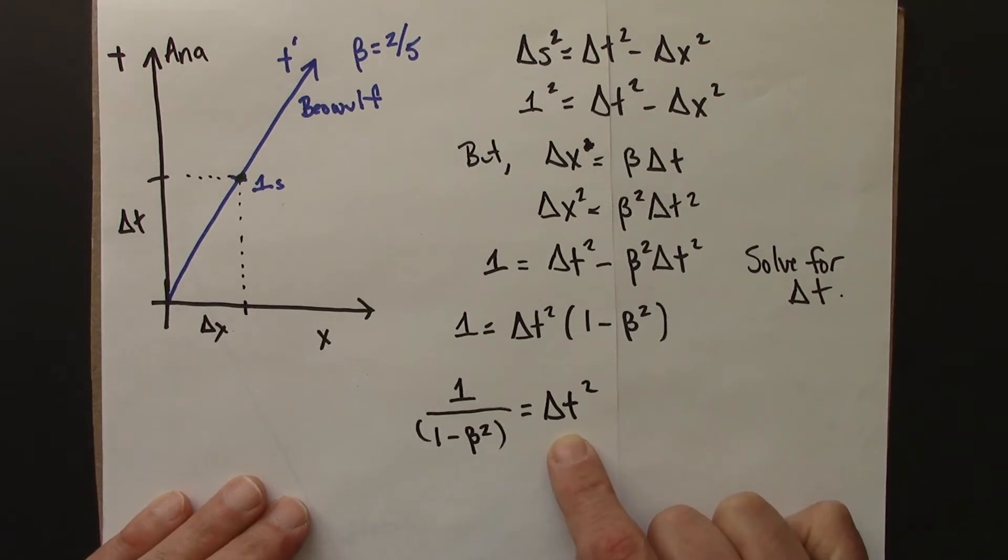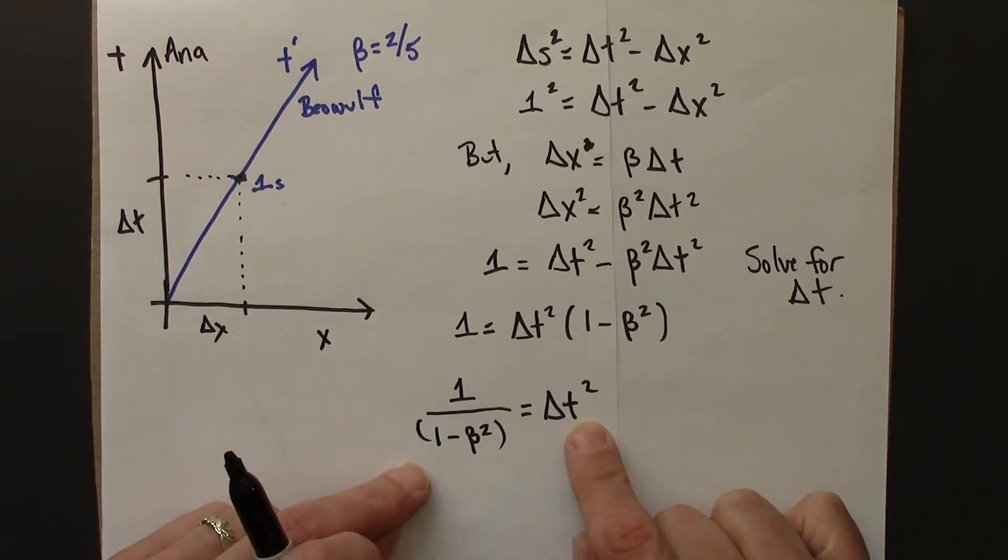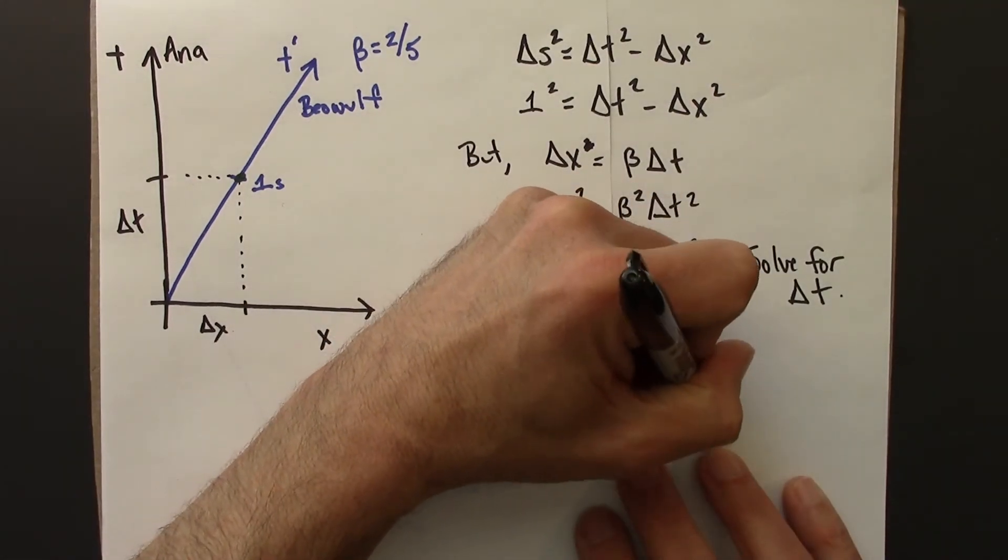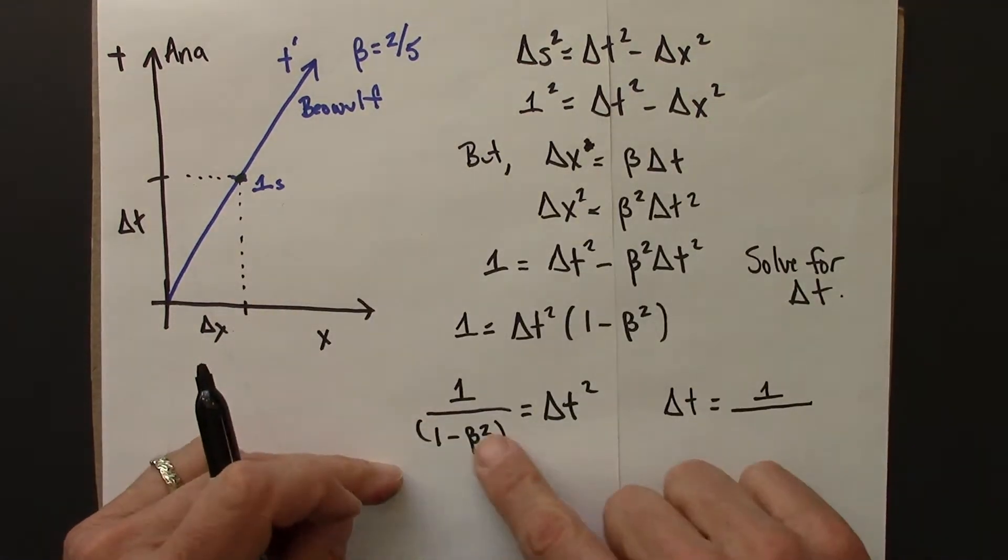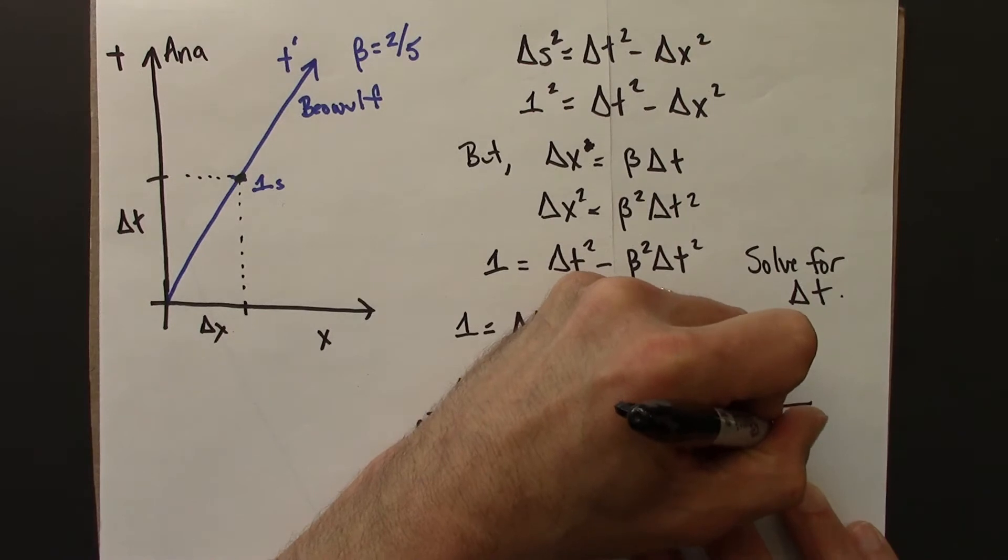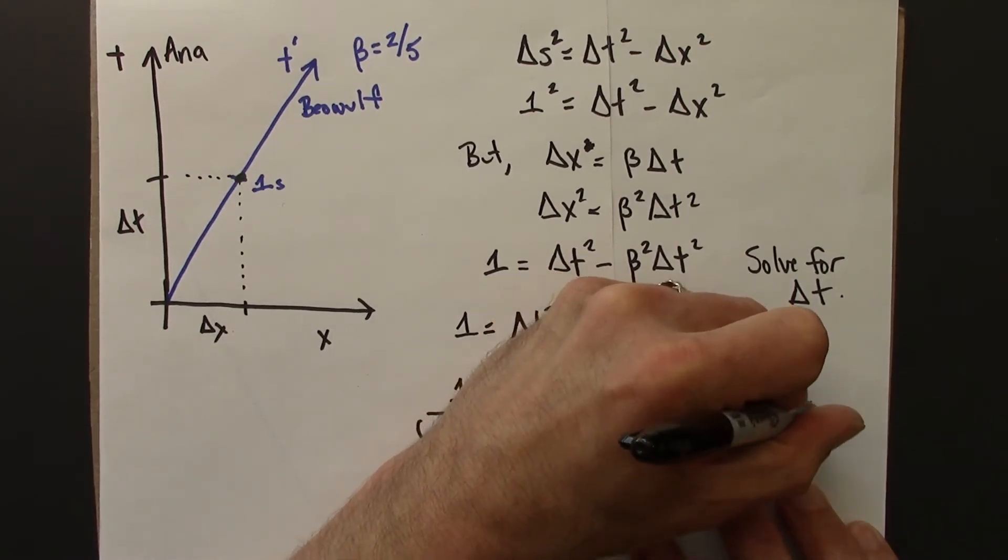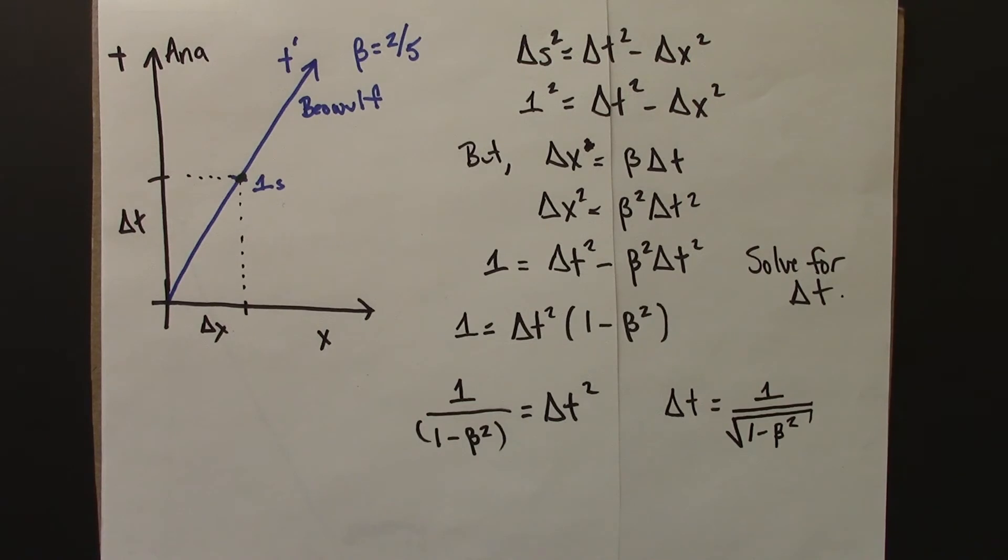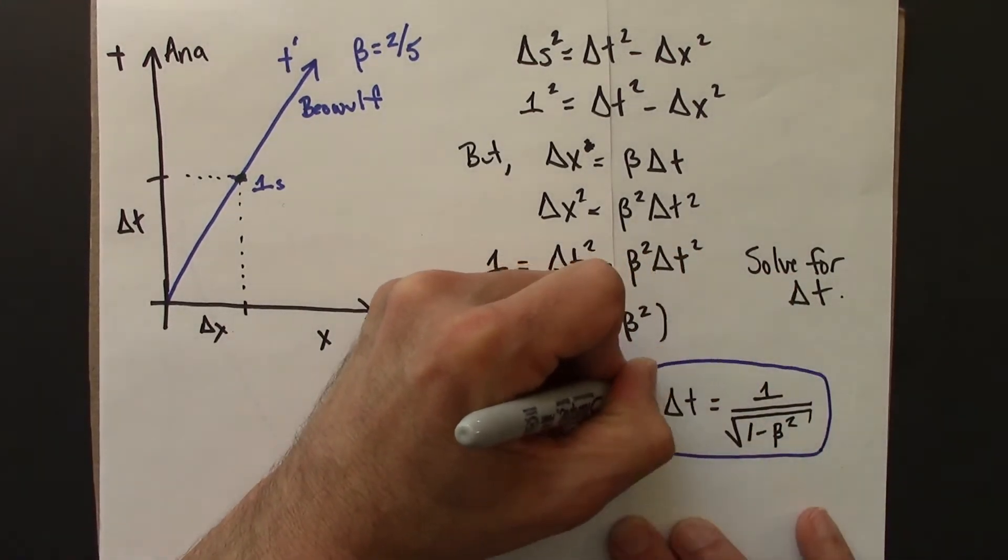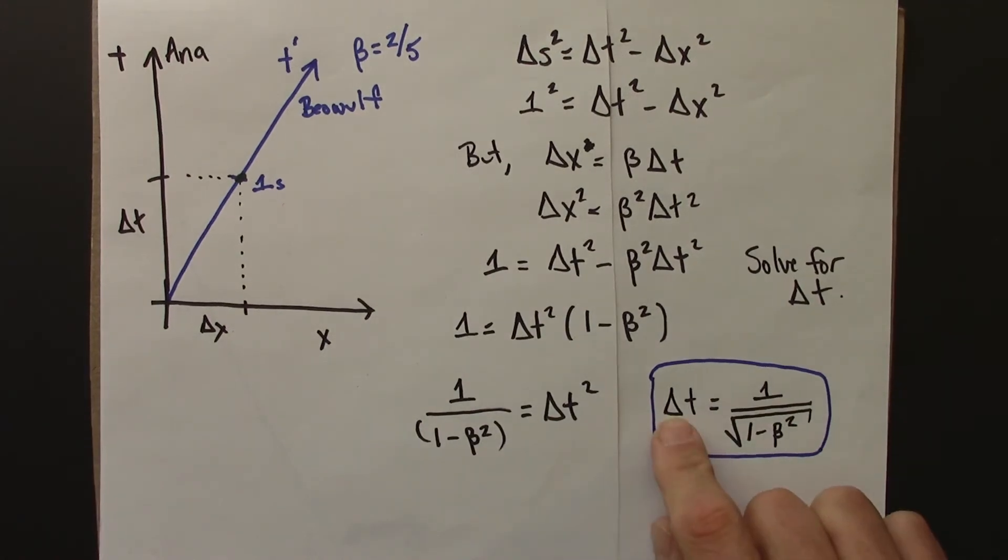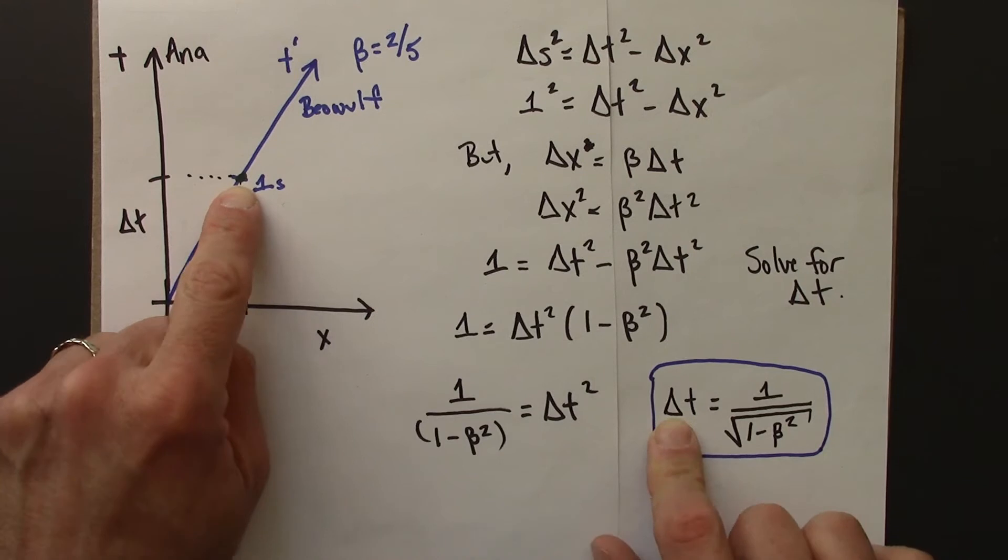Alright, so this is looking like progress. The last thing I'm going to do, because I want delta t, not delta t squared, is I'm going to take the square root of both sides. So I'm going to do that. I'm going to get the delta t is 1 over, and I have to square root this, 1 minus beta squared square root. So this tells me how to calculate the time interval in Anna's frame for 1 second in Beowulf's frame.